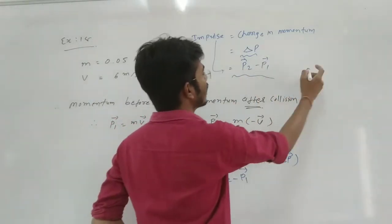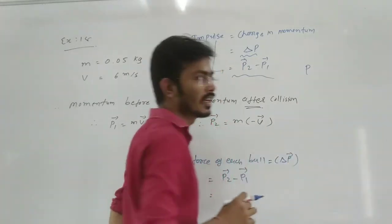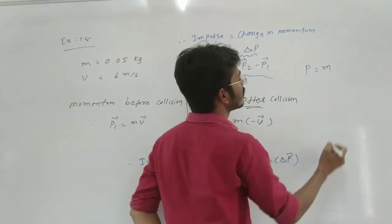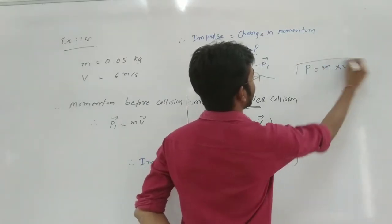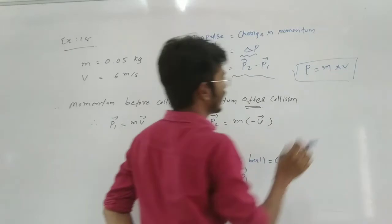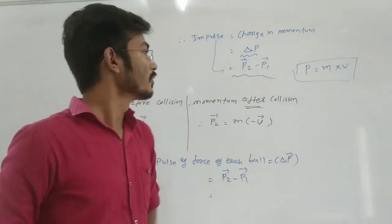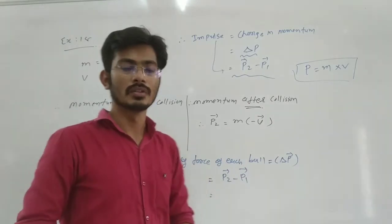Now p, that means what? P, that means momentum. Momentum depends on m and v. So in order to find out the momentum, we have to find out the p1 as well as the p2.